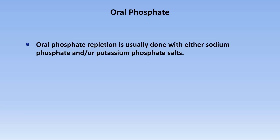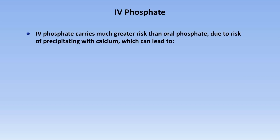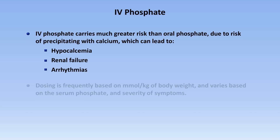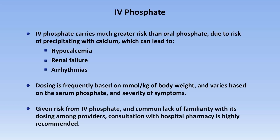For oral phosphate repletion, it is usually done with either sodium phosphate and/or potassium phosphate salts. Because doses can be written in either milligrams, milliequivalents, or millimoles, and because there is a wide variety of different products available at different institutions and in different countries, consultation with your local pharmacist is highly recommended. IV phosphate carries much greater risk of harm than oral phosphate due to the risk of precipitating with calcium, which can lead to hypocalcemia, renal failure, and arrhythmias. Dosing is frequently based on millimoles per kg of body weight and varies based on the serum phosphate and severity of symptoms. Given the risk from IV phosphate and the common lack of familiarity with its dosing among providers, consultation with hospital pharmacy is highly recommended.